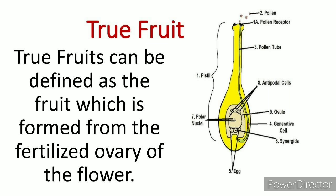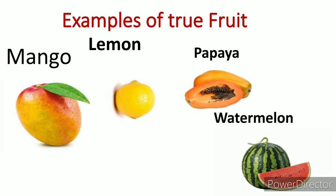First of all, true fruit. True fruit can be defined as the fruit which is formed by the fertilized ovary of the flower. Some examples of true fruit are mango, lemon, papaya, and watermelon.